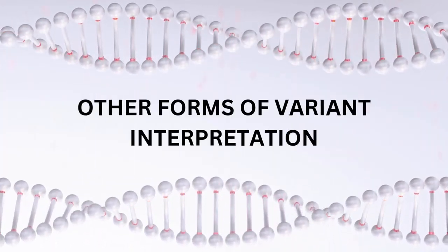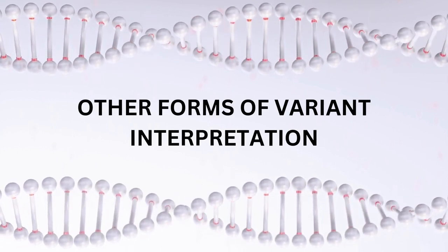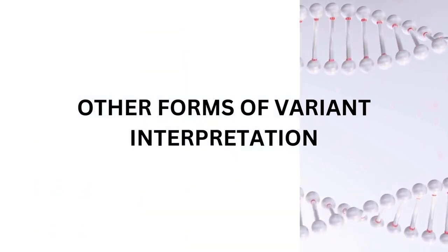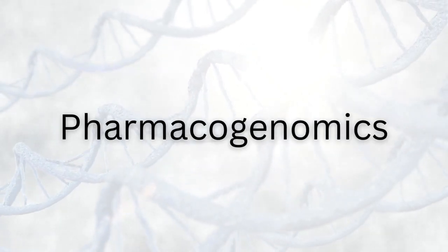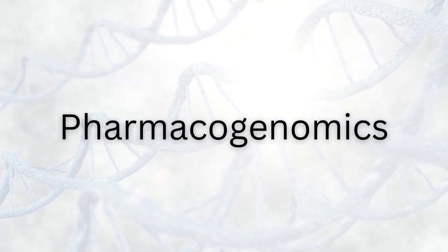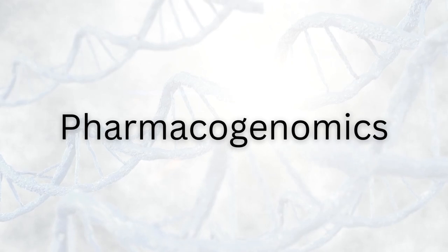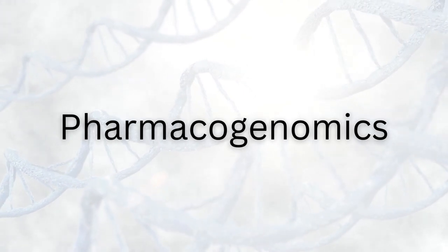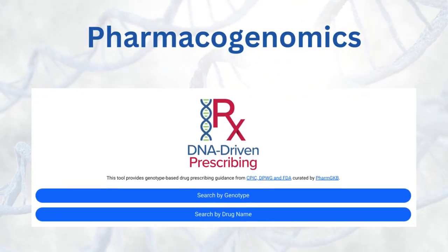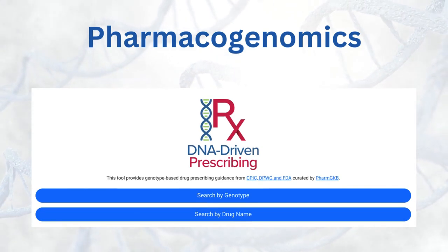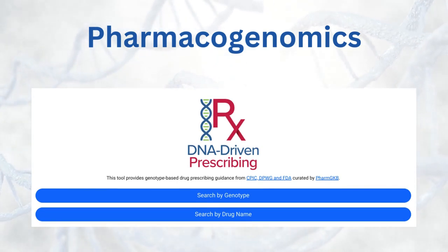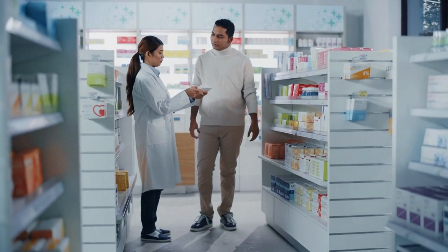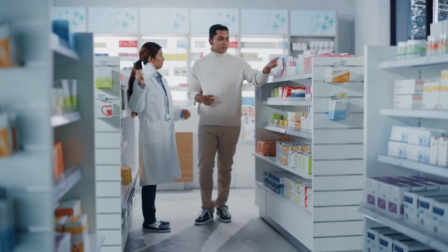Now that we have an understanding of germline variant interpretation, let's take a brief look at some other prominent forms of variant interpretation: pharmacogenomic and somatic variants. Pharmacogenomics is the study of drug-gene interactions. It is different in scope from germline interpretation but seeks to similarly explore the impact on disease — more specifically drug response — as a result of genomic variation.